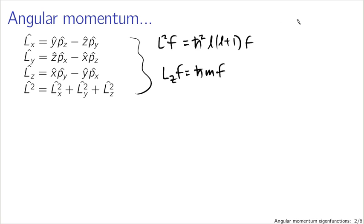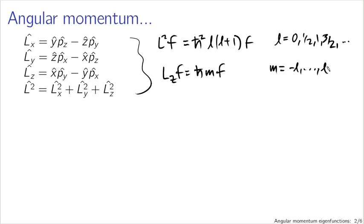The L values we got had to be half-integers: either 0, or one-half, or 1, or three-halves, etc. The constants M had to be between minus L and L, going up in steps of 1. So our eigenvalue structure doesn't tell us anything about the actual form of F.